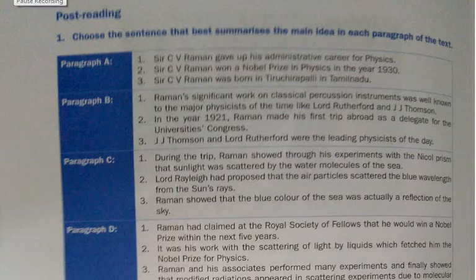We have completed the lesson and now we move on to the post-reading session. Here we have a small exercise: choose a sentence that best summarizes the main idea in each paragraph of the text. Paragraph A has three sentences, paragraph B has three, and the same for C, D, and E. This is essentially a summary of the whole lesson. From each paragraph, you have to pick out the main idea from the three sentences given.